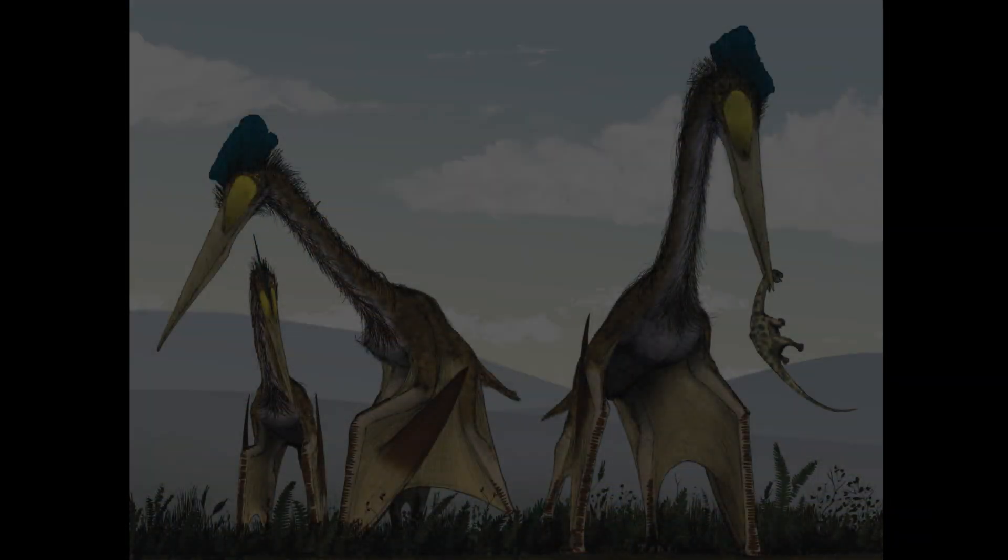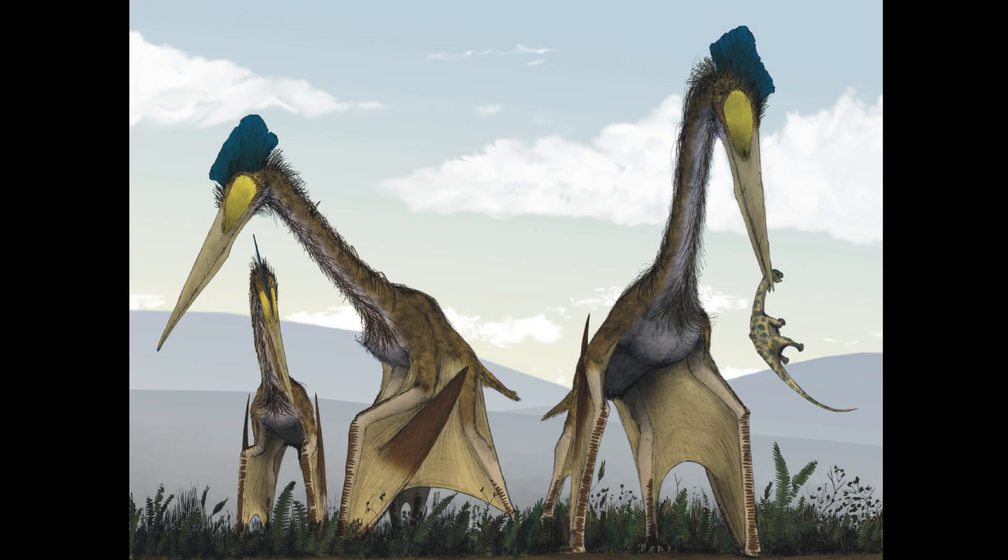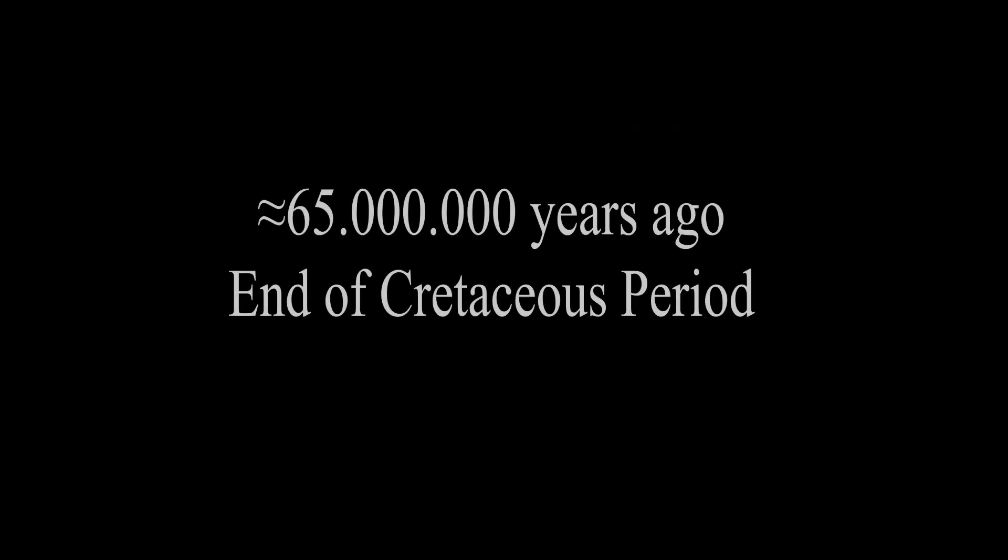Dinosaurs were vertebrates that dominated the Earth's ecosystem for about 165 million years. They first appeared about 230 million years ago and became extinct about 65 million years ago.